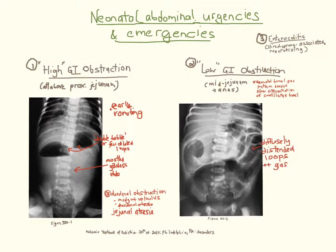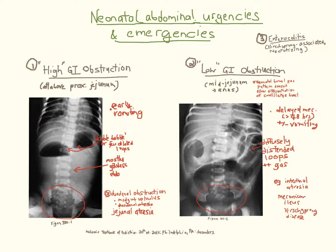On the other hand, when bowel loops are diffusely distended, we suspect a low GI obstruction, which can occur anywhere distant to the proximal small bowel, because of the non-specificity of the neonatal bowel gas pattern. These babies often present a bit later, classically with delayed meconium, vomiting which may be bilious, and distended abdomens. In both groups, no air will be seen in the rectum on x-ray by 24 hours of age, and shock or perforation can ensue.